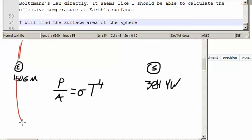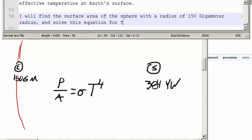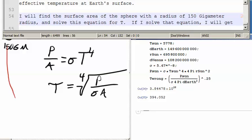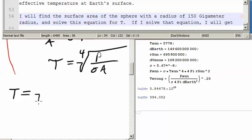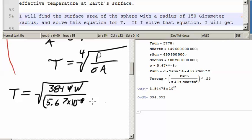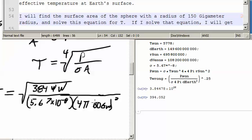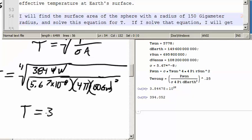Now, if I apply Stefan Boltzmann's law directly, it seems like I should be able to calculate the effective temperature at earth's surface. I will find the surface area of the sphere with a radius of 150 gigameters, and then I will solve this equation for T. So that will end up giving us the wrong temperature. But it's the power of the sun, which was the 384 yotta watts, divided by sigma, 5.67 times 10 to the negative eighth, divided by the area, which is 4 pi times 150 gigameters quantity squared. And then take that all to the power of 0.25, which is the fourth root.